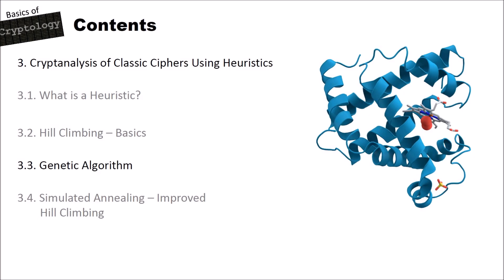Hello and welcome to a new video on the Cryptool 2 YouTube channel in the Basics of Cryptology series. This is the second series about analyzing classical ciphers with heuristics. In the last video of this heuristics sub-part, I showed you how you can analyze classical ciphers with hill climbing. In this video, I want to show you how you can analyze classical ciphers with help of the genetic algorithm.